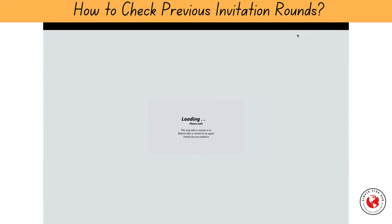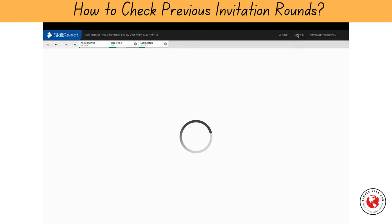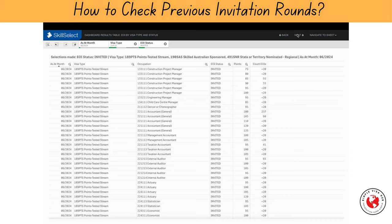Click on next to see the results. It takes a few seconds for the system to load the results. You can see on the screen different occupations along with their respective codes that were invited under subclass 189, 190, and 491 in June 2024. You can also see the points and number of invitations issued to each respective occupation. This information will provide you a realistic picture for your own EOI.